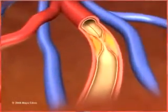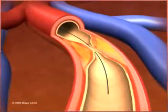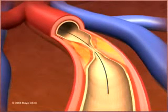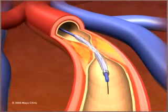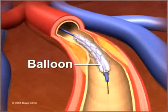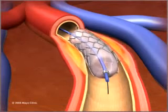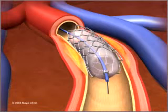A thin, flexible metal wire is then advanced through this tube and past the site of blockage in the artery. A second, smaller catheter is then inserted over the wire and threaded to the same artery. When it reaches the narrowed area, a small balloon on its tip is inflated to reopen the artery and flatten the blockage into the artery wall, while at the same time stretching the artery open to increase blood flow to the heart.